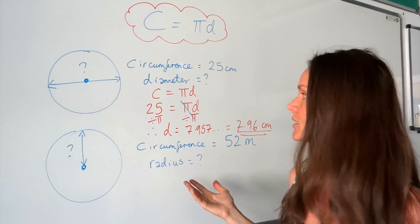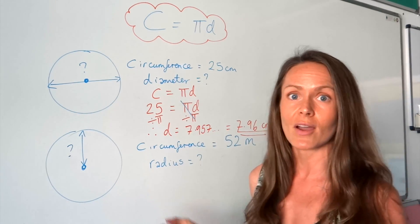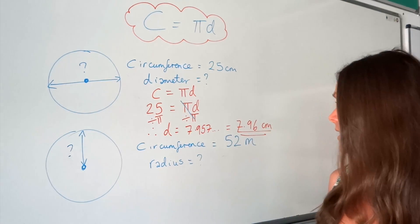That's the first one done. That was really easy. All you had to do was divide the circumference by π to find the diameter. Now on to the next one.